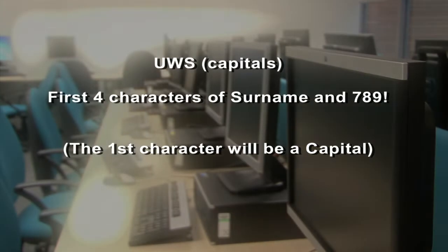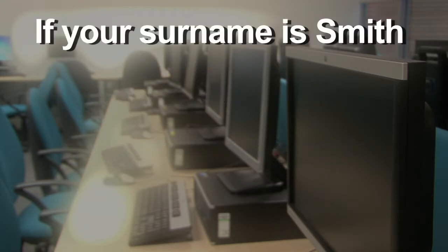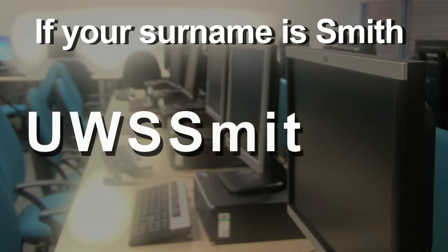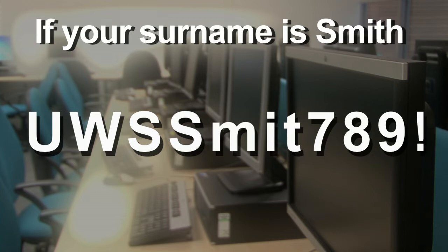For example, B00111111. Your initial password is UWS in capitals, followed by the first four characters of your surname and 789! Usually only the first of these characters will be a capital — for example, UWS SMIT789! However, should your surname contain more capital letters or punctuation, for example McDonald or O'Donnell, then this will be the same in the password — for example, UWS MACD789!